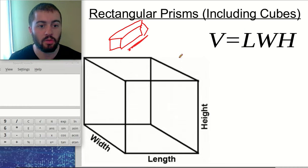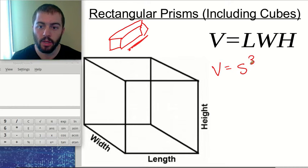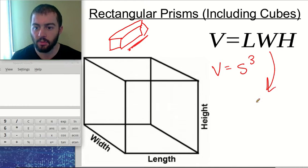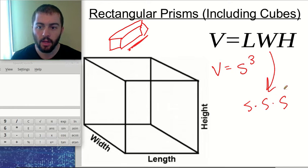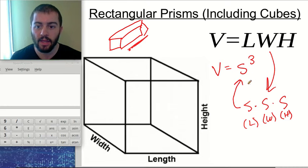For all these rectangular prisms, whether they're cubes or longer, the formula is the same: volume equals length times width times height. For the case of a cube, the volume would be side cubed, because a cube has the same length for the width, the length, and the height. So side times side times side can be represented as side cubed.